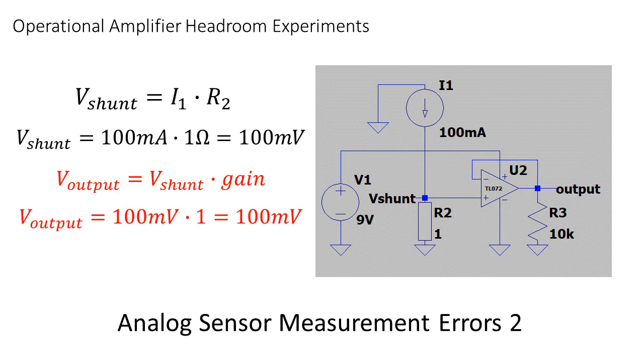Now we pass this voltage to a buffer, so we can do whatever we want with the measured signal without harming it. But suddenly our op-amp tells us that the measured voltage is way higher than 100 millivolts. And this is all due to the op-amp not being able to process such low signals.